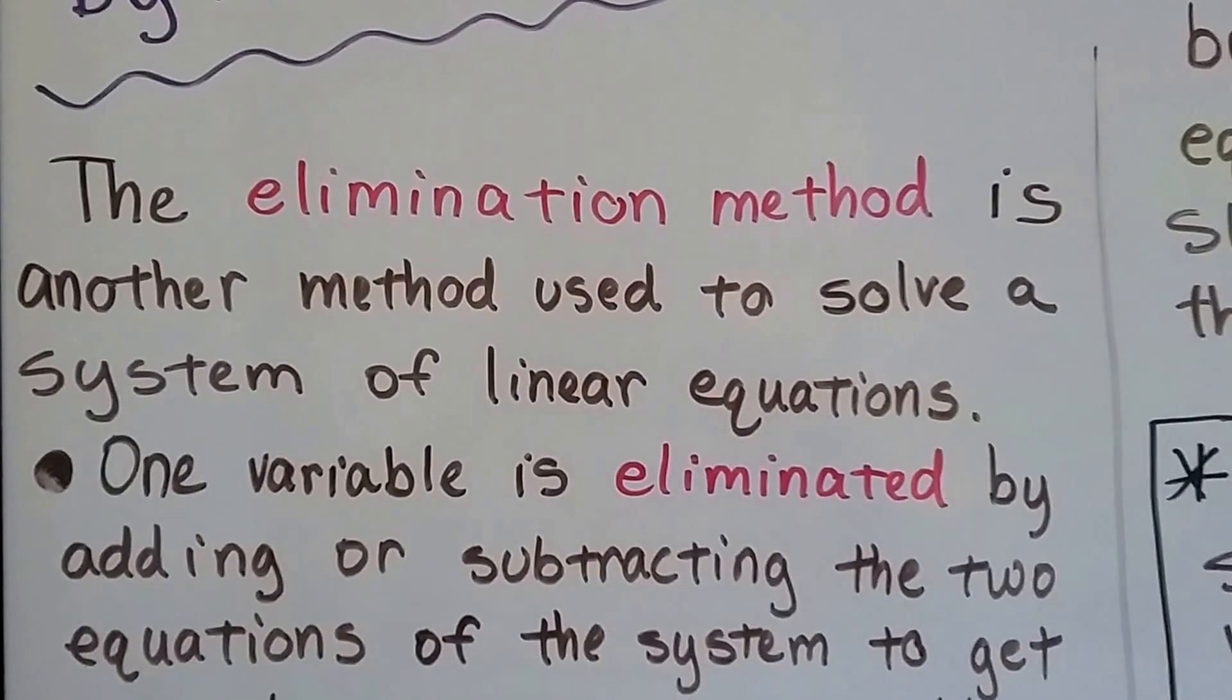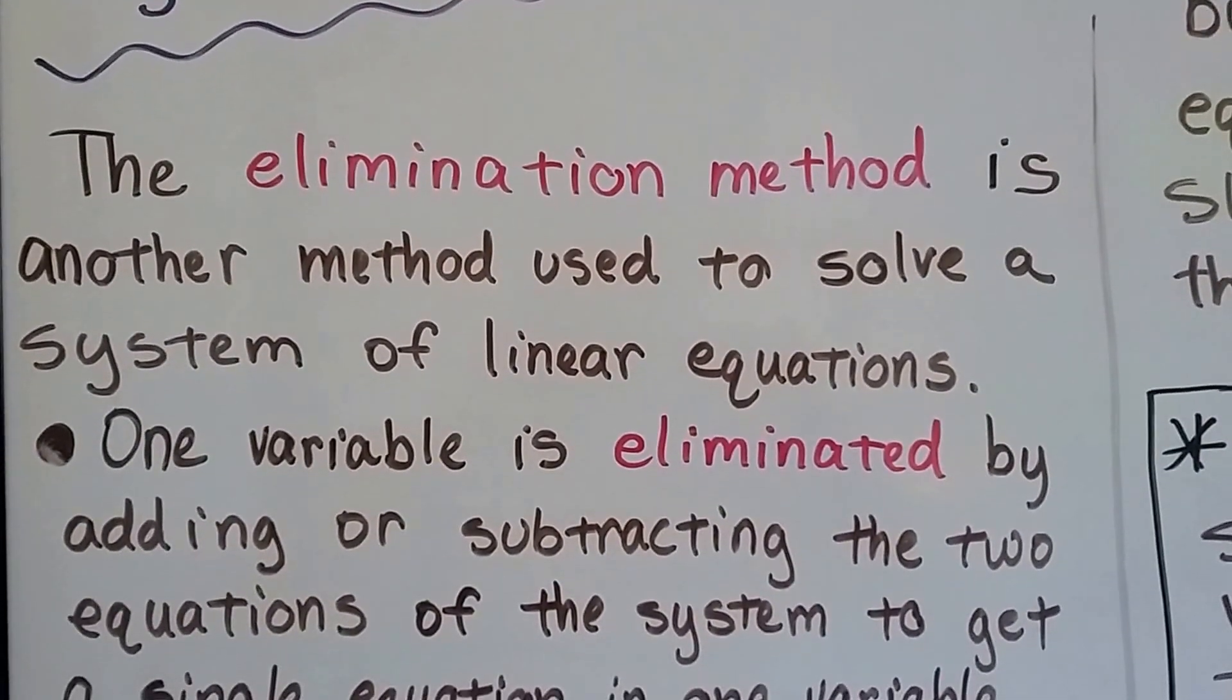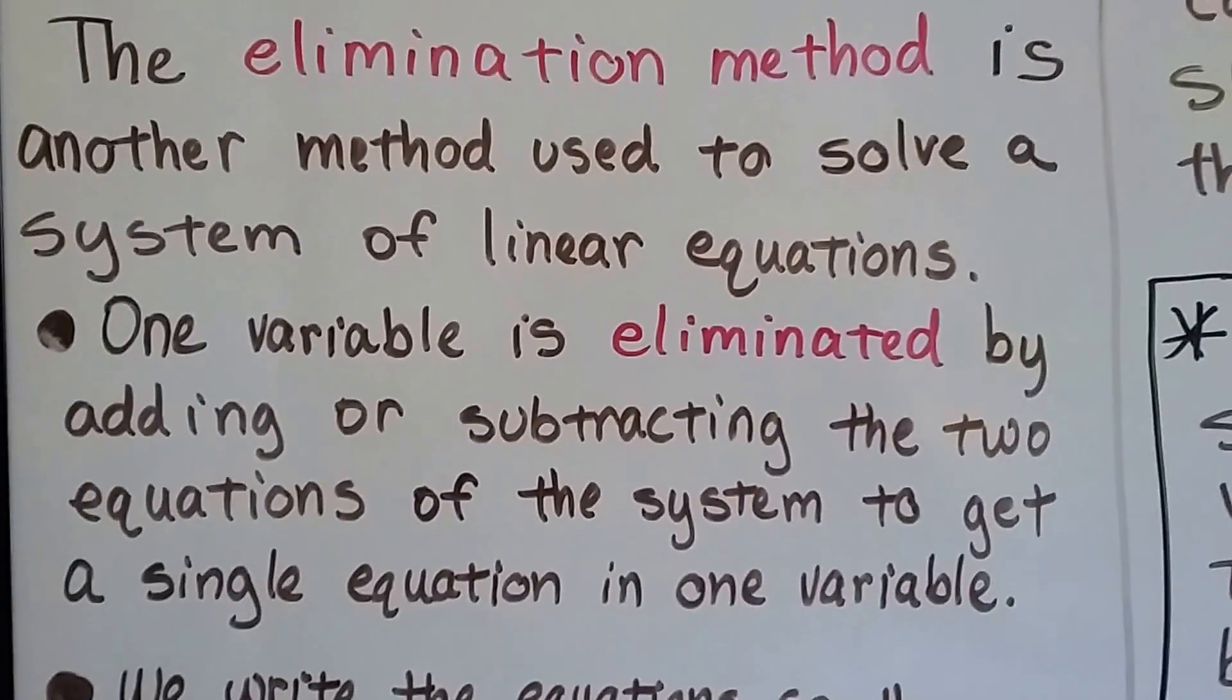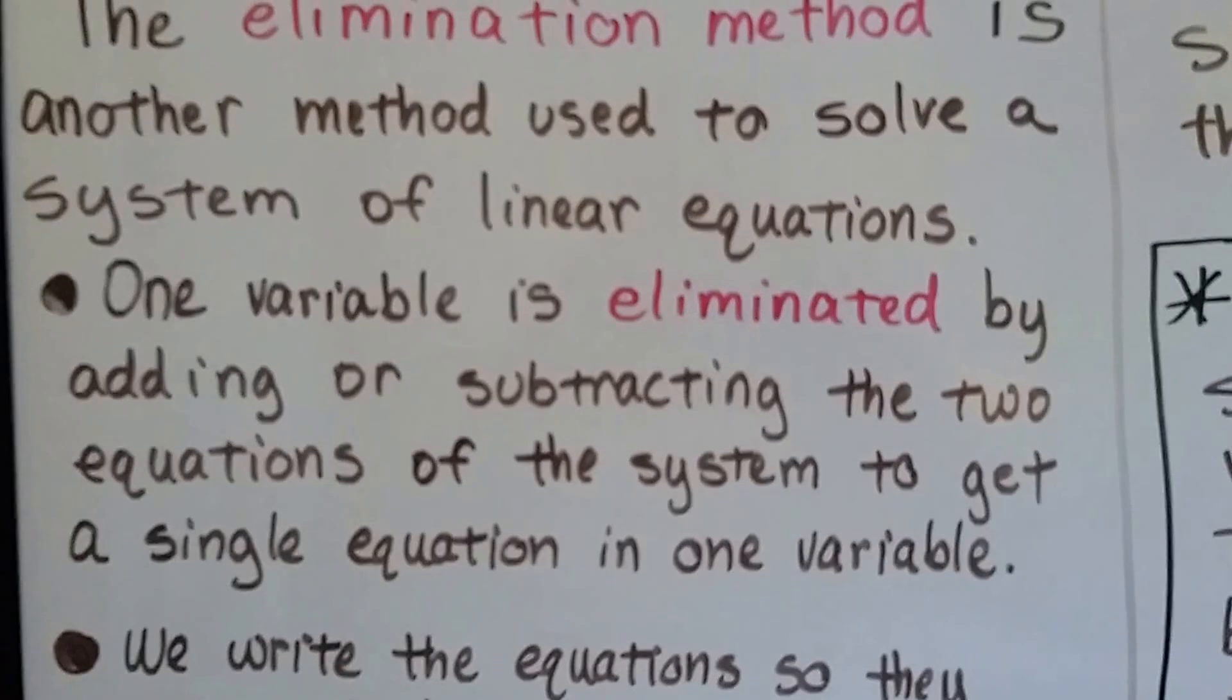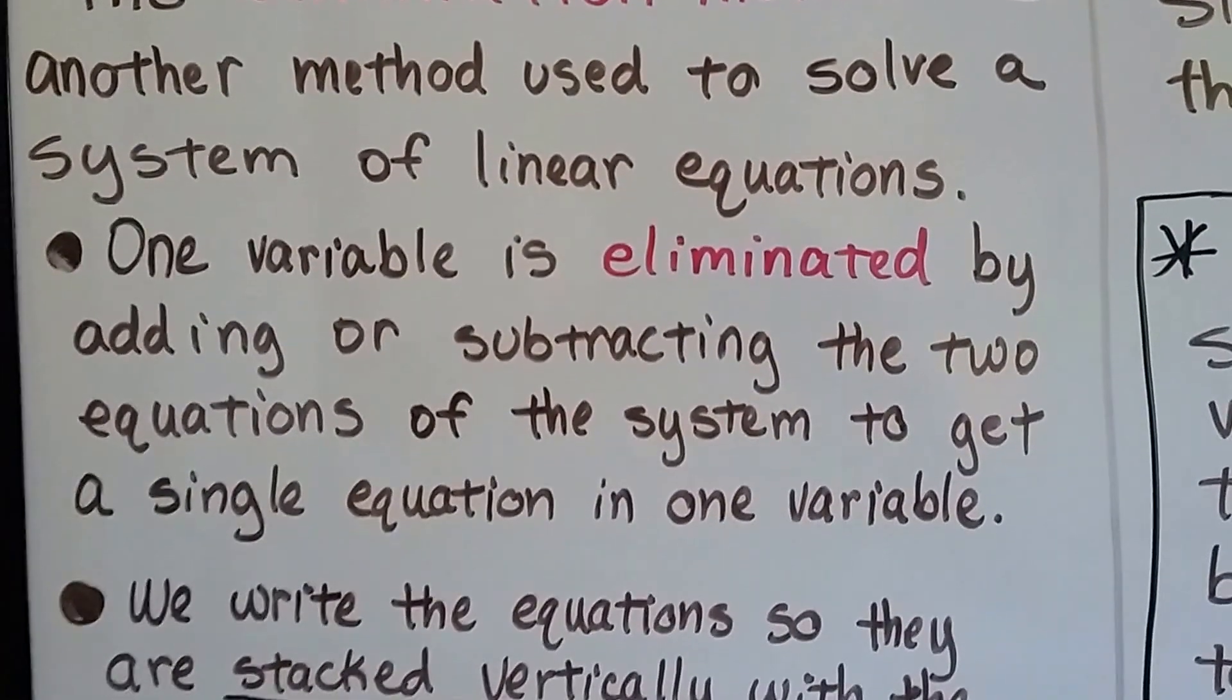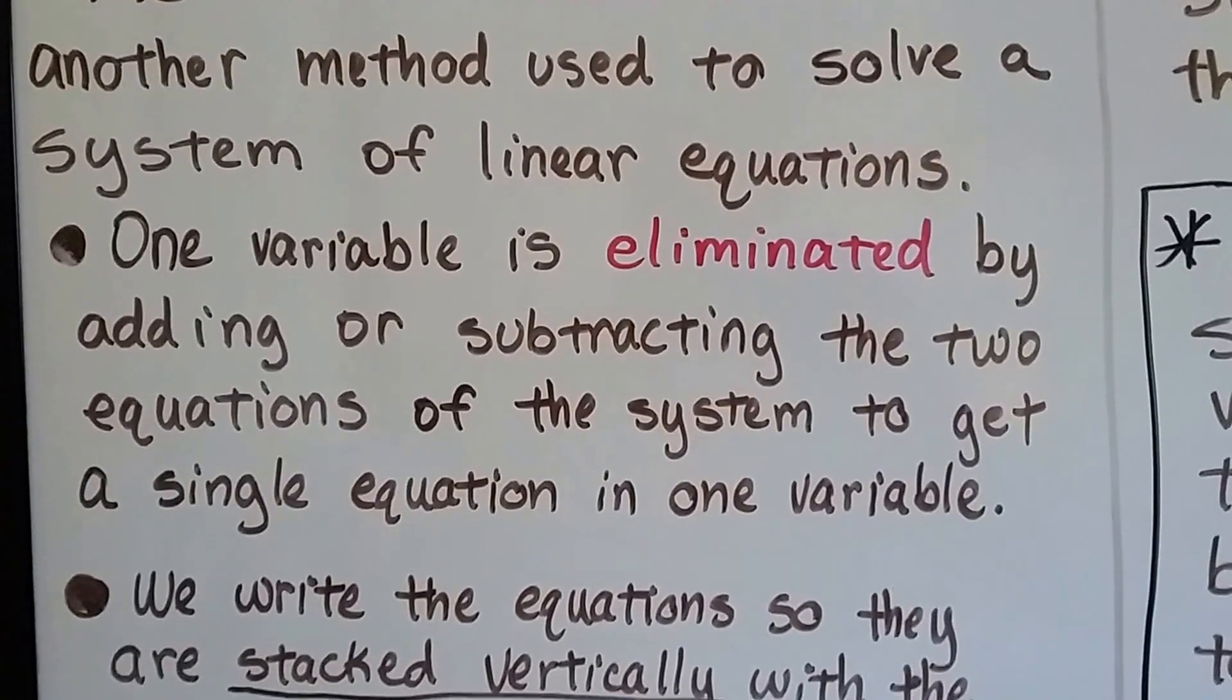The elimination method is another method used to solve a system of linear equations. In the last unit we used substitution. So in elimination, one variable is eliminated by adding or subtracting the two equations of the system to get a single equation in one variable.